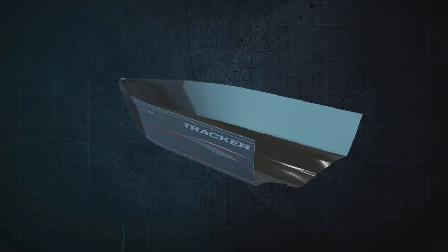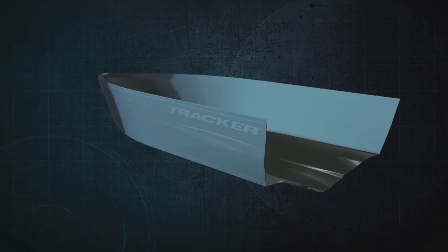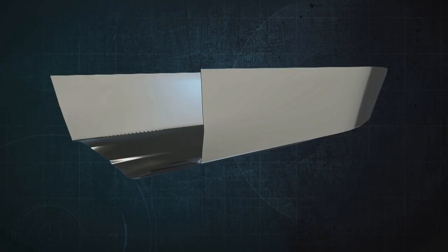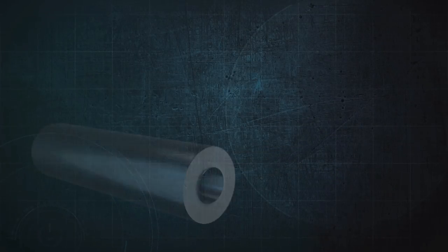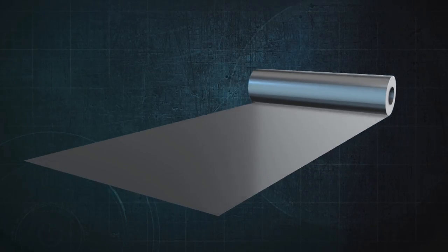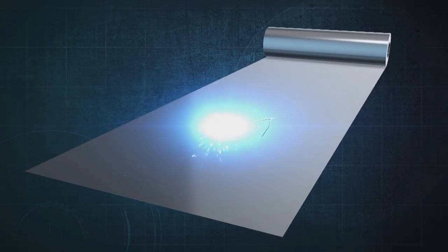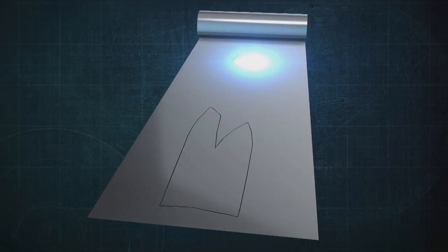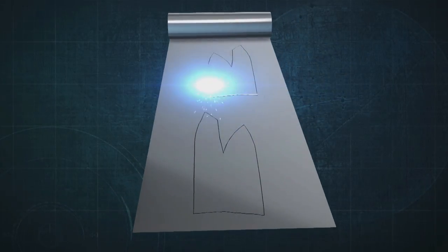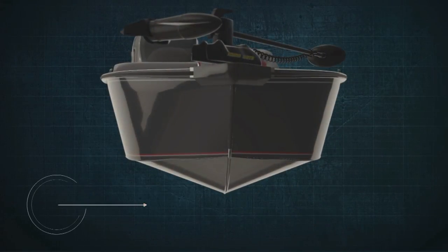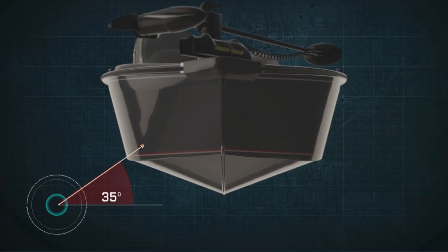Like a house with a strong foundation, a well-built boat starts with a hull. Tracker begins by cutting from a roll of marine-grade aluminum, an extremely tough alloy developed to withstand the rigors of the outdoor environment. The smooth, dry ride of a Tracker Deep V comes from a 35-degree deadrise in the front.